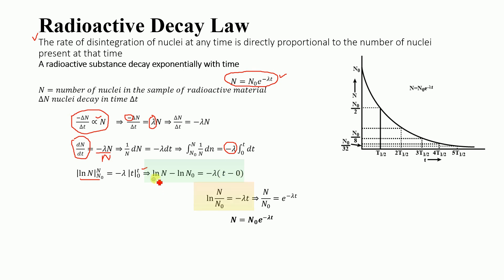According to the rules of logarithm, if we have ln(A) − ln(B), we can write it as ln(A/B). Applying that rule here, we get ln(N/N₀) on the left-hand side. On the right-hand side, −λ multiplied by 0 becomes 0, so we are left with −λt. Therefore, ln(N/N₀) = −λt.